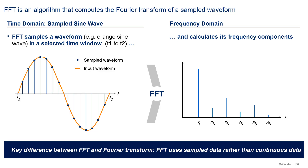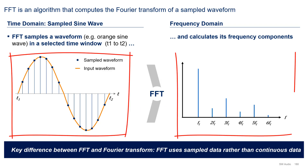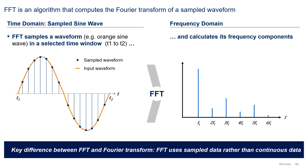In the previous video, we discussed the Fourier transform and how it enabled us to study a time domain signal in the frequency domain by decomposing the signal into its frequency components or tones. In practice, doing a Fourier transform in simulation is not possible. What you do is an approximation by using the fast Fourier transform algorithm, or FFT for short. Unlike the Fourier transform, which takes a continuous waveform as its input, the FFT samples the input waveform, and uses the sample data to compute the frequency tones. This key difference leads to a few caveats that we need to consider when doing the FFT.